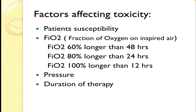What are the factors affecting toxicity? The first one is patient susceptibility. For example, in G6PD-deficient patients, the chance of toxicity is more. Next is the fraction of inspired oxygen (FiO2). For example, 60% FiO2 takes more than 48 hours to cause toxicity, whereas 100% takes more than 2 hours only. With an increase in the pressure of oxygen therapy, there is more toxicity. The same happens with the duration of therapy.